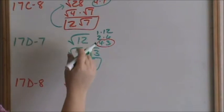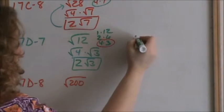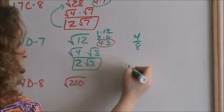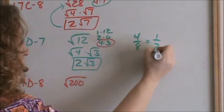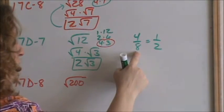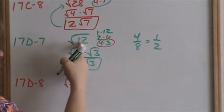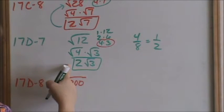I think of simplifying radicals just as reducing fractions. If I tell you to reduce the fraction 4 eighths, you can reduce that to 1 half. 4 eighths equals 1 half. Square root of 12 equals 2 times square root of 3.